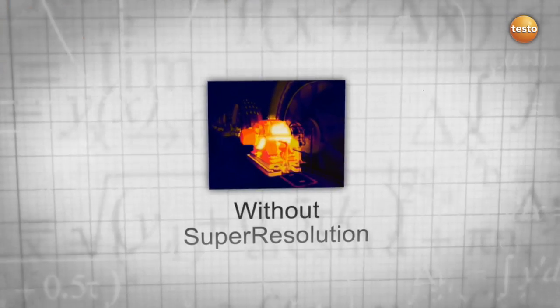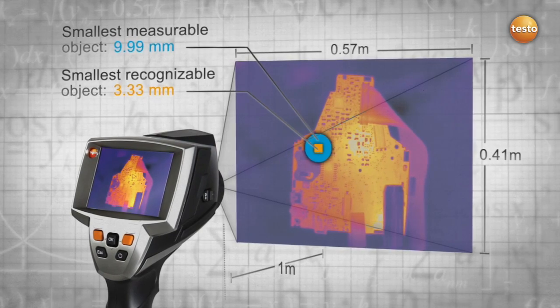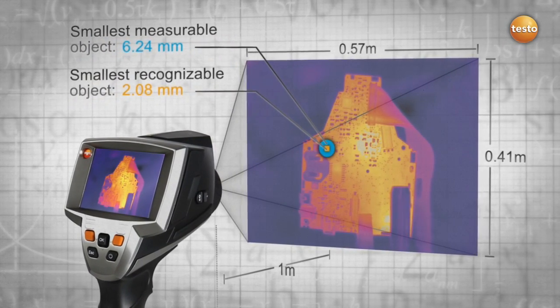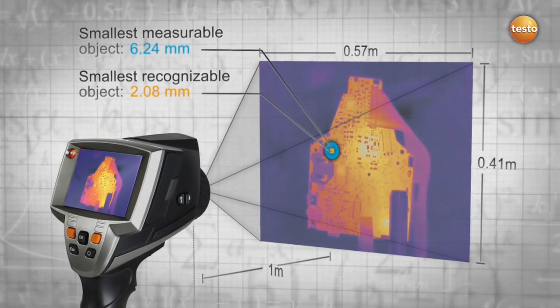The Super Resolution technology leads to more meaningful thermal images. But that's not all: as your smallest measurable object decreases in size, you are still able to detect more details while maintaining the same distance to your measured object.